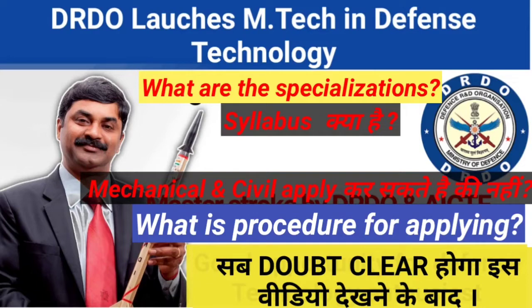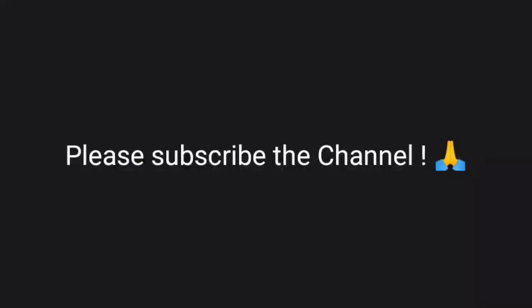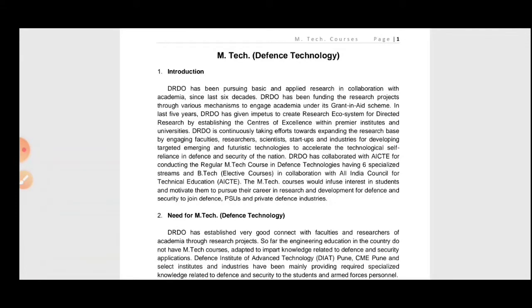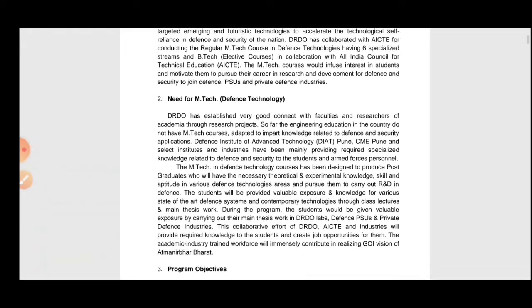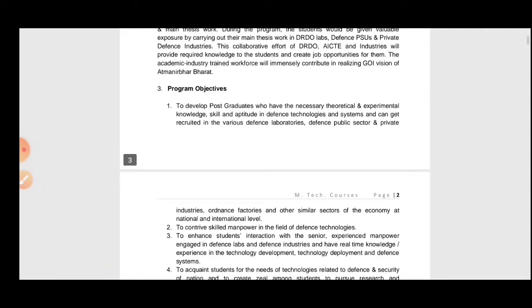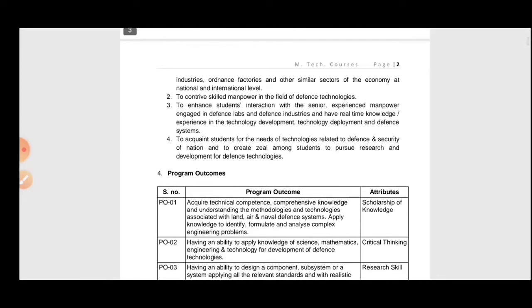I will also tell you what will be the course content and the course structure — basically whether it will be of six semesters or four semesters — and what things need to be studied in semester one and semester two. This is the guideline which is released by DRDO and EICT. A lot of things are written here like what is the need for MTech in Defense Technology and what are the program objectives.